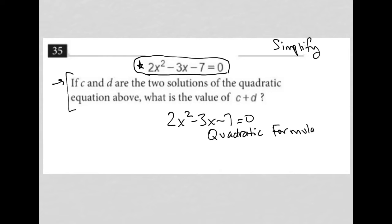which hopefully you know. If you don't, here's a good review. It is negative B plus or minus the square root of B squared minus 4AC all over 2A. That is what x will equal.